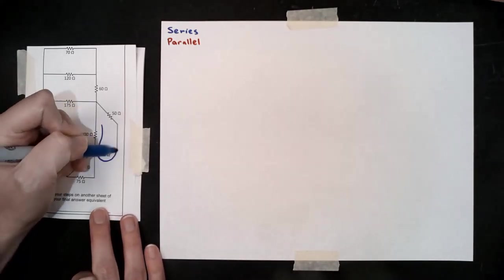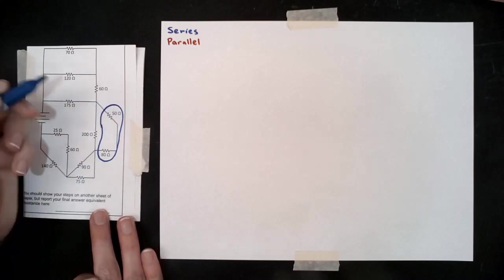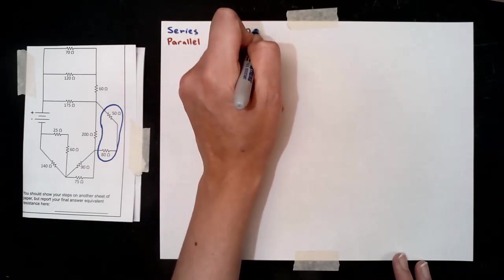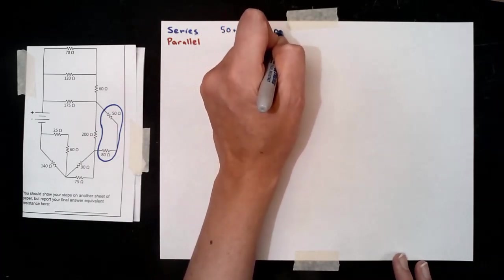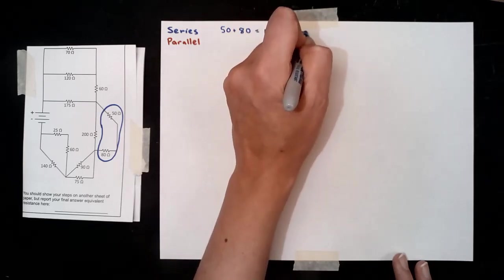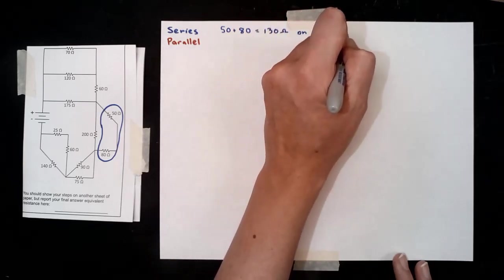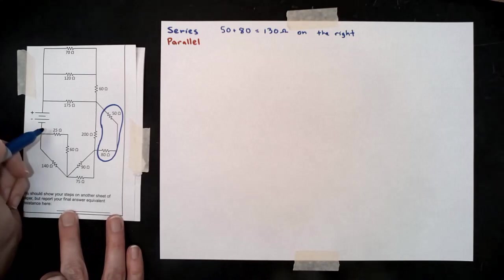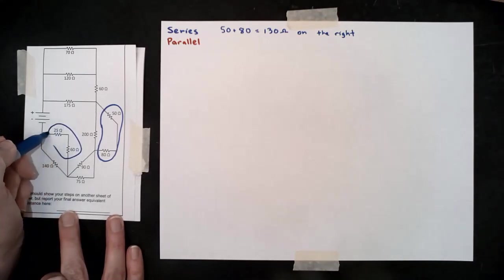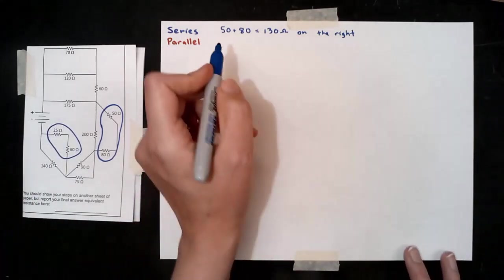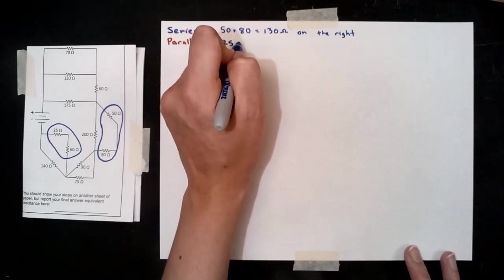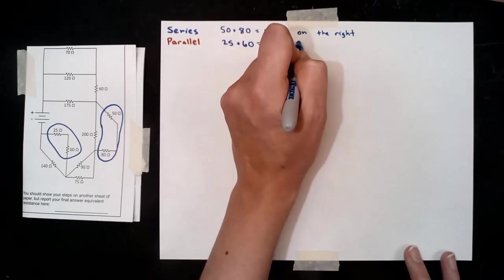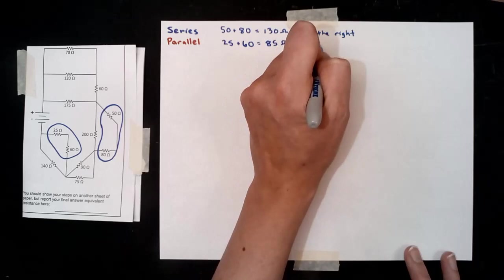Series is normally the easiest ones to notice, so we'll start with those. On the far right over here we have a 50 ohm resistor and an 80 ohm resistor in series. They're on the same wire, there's nowhere else for the current to go, so they are in a line with each other. We can just add them up. We also have a pair of resistors kind of in the lower left here that are also in series with each other. They're on the same wire, there's no junctions in between them, the current only has one place to go, and so we can add the 25 and the 60 ohms together.